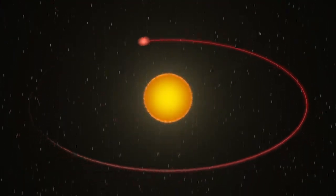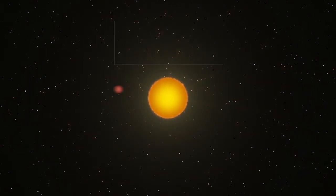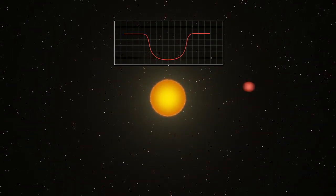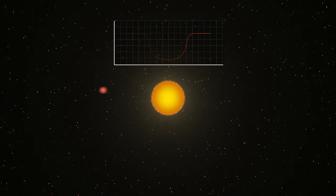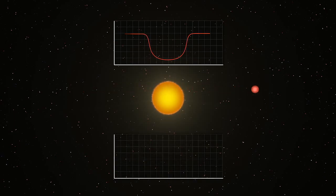Kepler finds exoplanets by carefully watching starlight, looking for slight dips in brightness as a planet passes in front of, or transits, its star. This technique, called time-series transit photometry, is most effective for large planets in close orbits. This both maximizes the light loss during a given transit and the number of transits we observe.